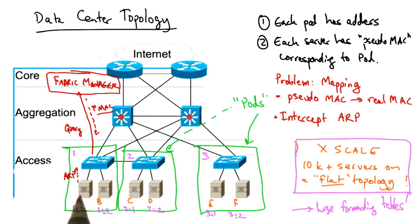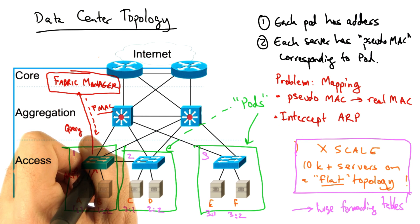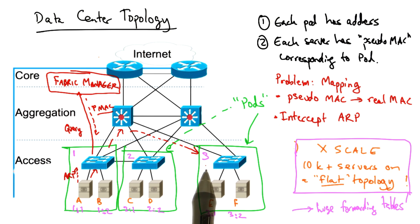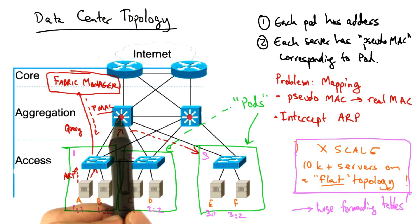Host A then sends the frame with the destination pseudo MAC address and switches in the topology can forward that frame to the appropriate pod corresponding to the pseudo MAC address of the destination server.